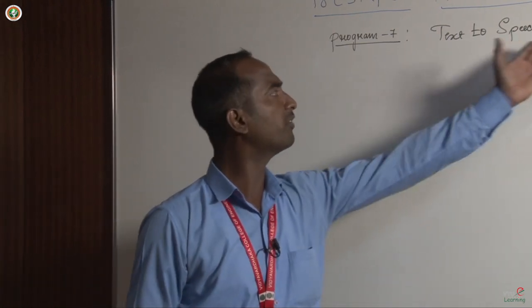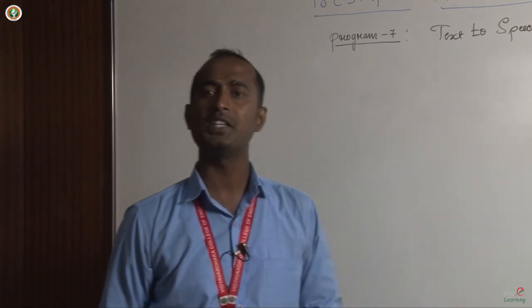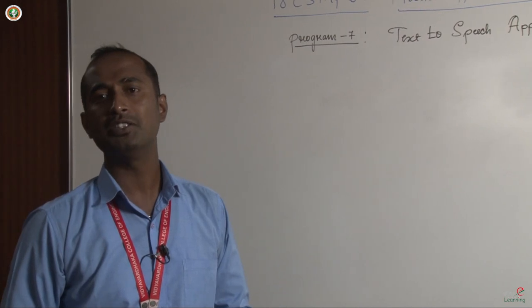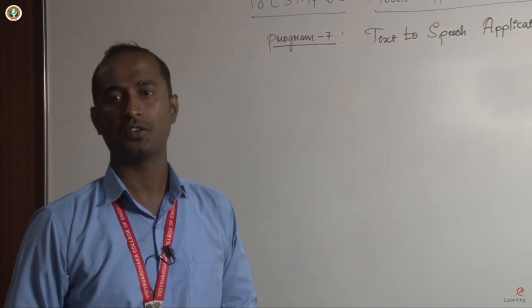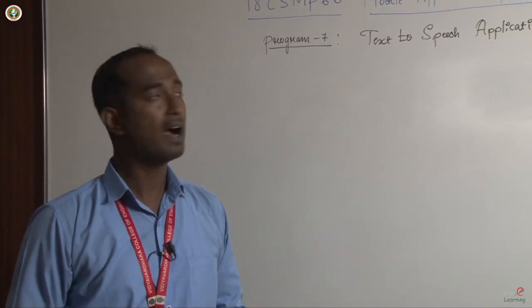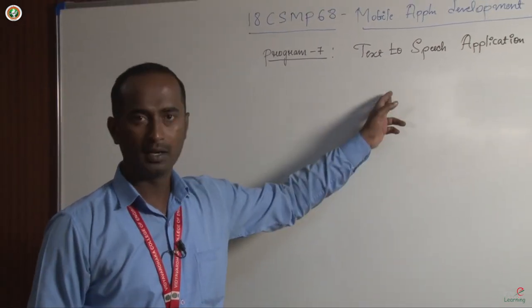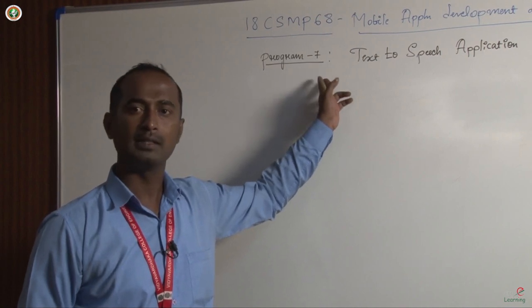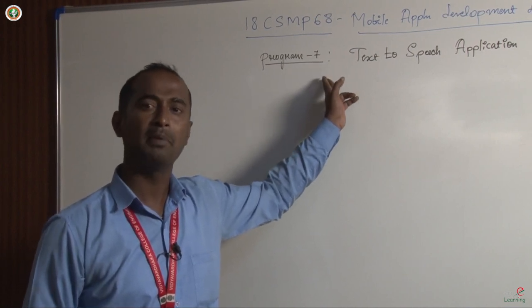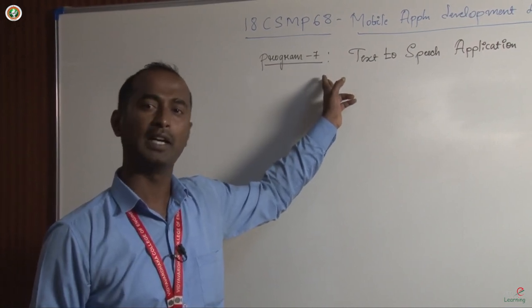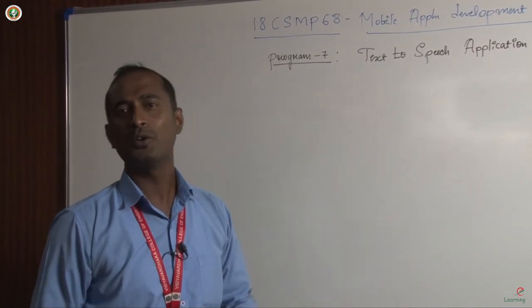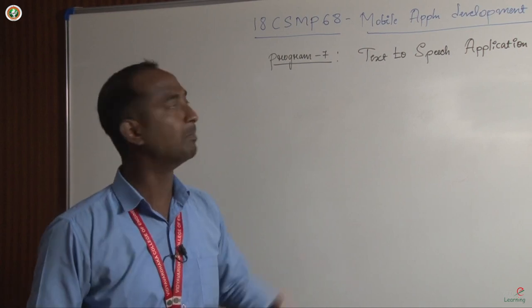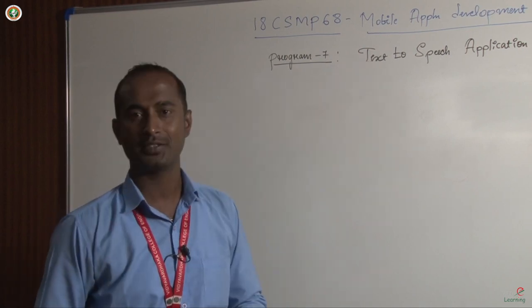For example, if you want to develop this text to speech application from scratch, you have to write around 10 pages of code. But with respect to program number seven, this is the simplest program in your syllabus — you are going to write around 4 lines of code to complete this application.